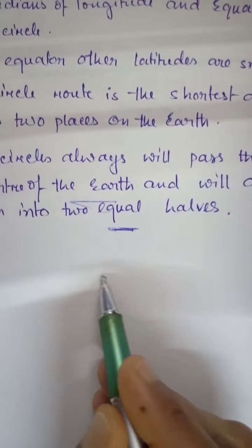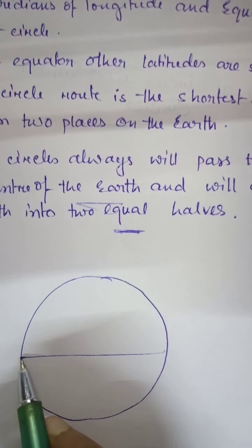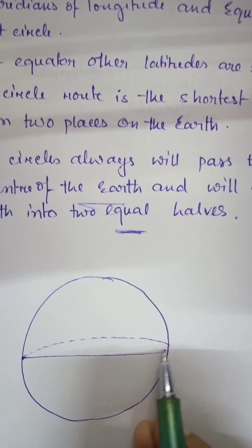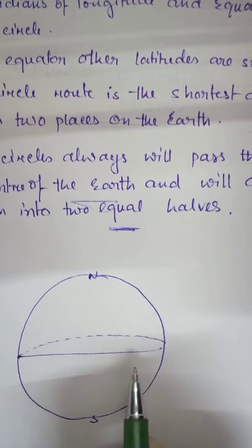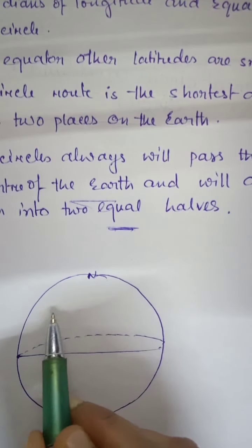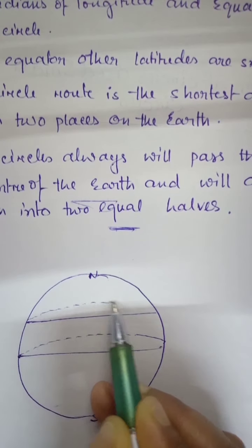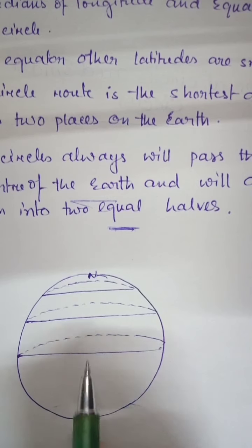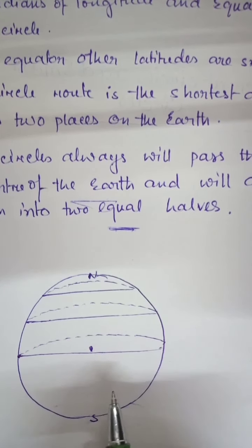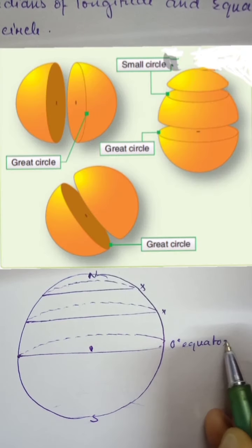A great circle divides the Earth into two equal halves. If I draw the Earth as a sphere, the equator divides it into two equal halves and passes through the middle part of the Earth. The great circle has the maximum circumference. As we go towards the northern or southern pole, the circumference gradually decreases and those lines no longer divide the Earth into two equal halves — so only the equator at zero degrees is a great circle.